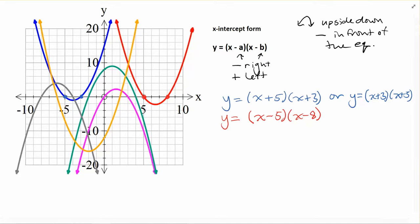So taking a look at the green one, again, looking for my intercepts here. So I'm at negative 2, or to the left 2. And I am at 4, or to the right 4. So here I'm going to have, to the left 2 is going to be plus 2. And to the right 4 is going to be x minus 4. So it needs to be a positive 2 there, and a negative 4.